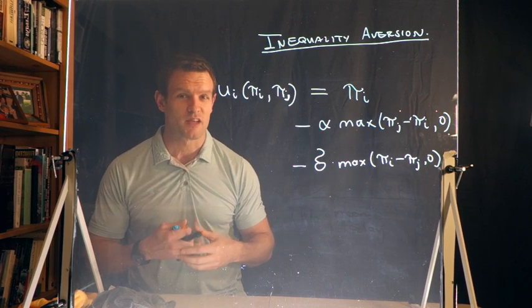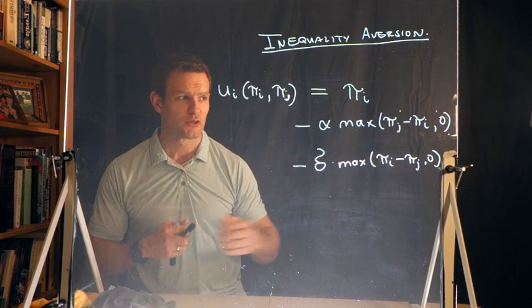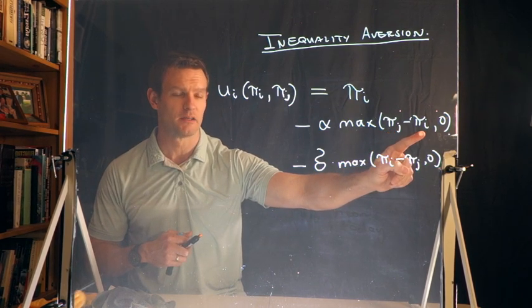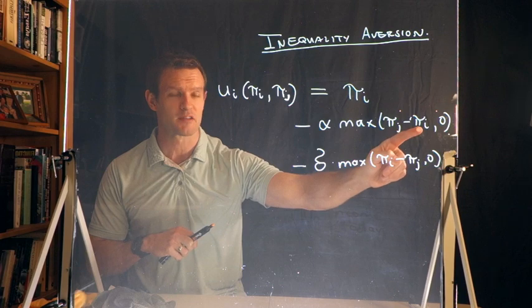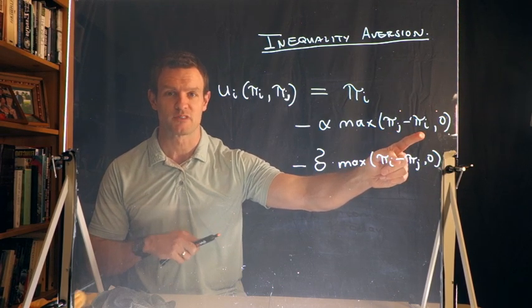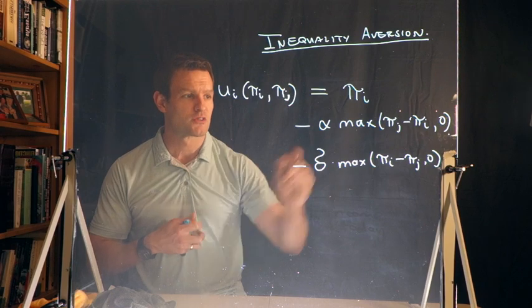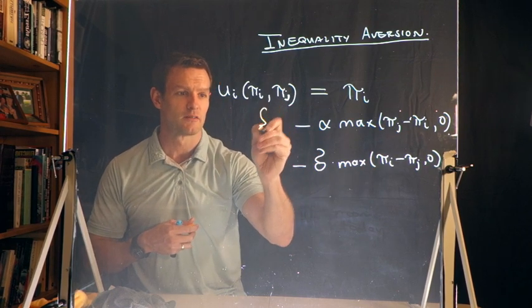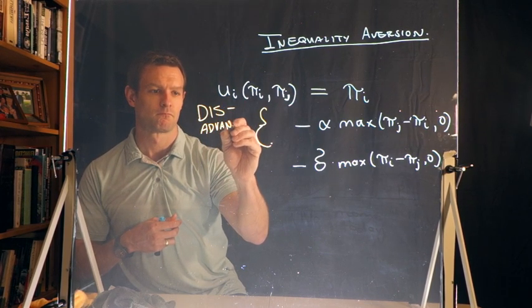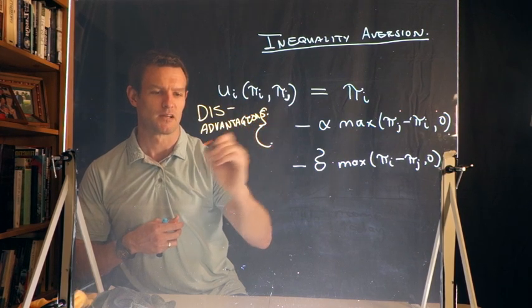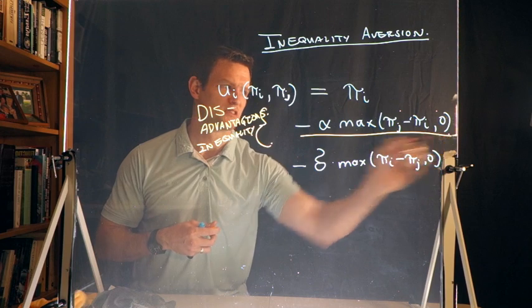Now that's going to help us understand which of these is telling us about advantageous versus disadvantageous inequality. If I'm comparing π_j minus π_i, so your payoff is π_j, my payoff is π_i. π_j minus π_i, your payoff minus my payoff - as we said a second ago, 15 minus 5, that difference is 10. You have $10 more than I do. So this first term over here is measuring disadvantageous inequality.